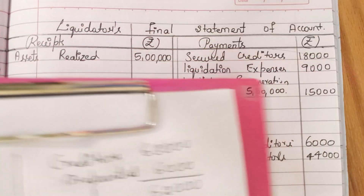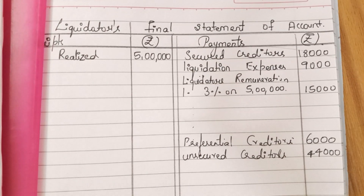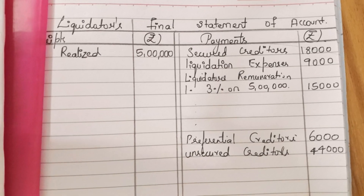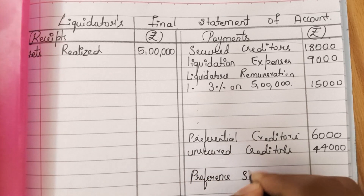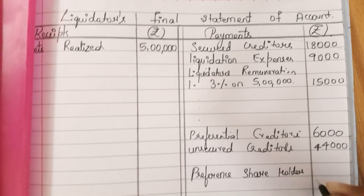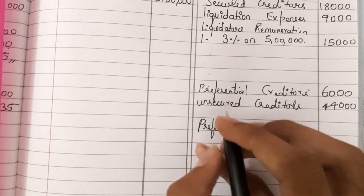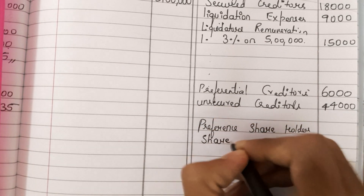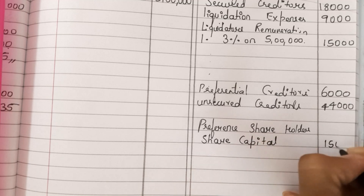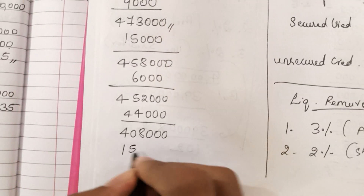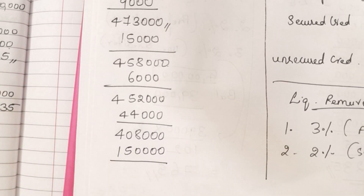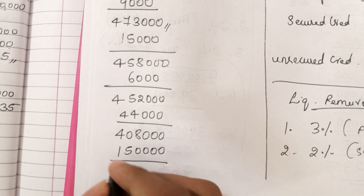Now, the equity shareholders as well as preferential shareholders will be paid, but the preference shareholders get one-third of the surplus. First, we pay preference shareholders. The preference share capital is rupees 1,50,000. Let us give them whatever capital amount we received from them. So from 4,08,000 minus 1,50,000, the remaining balance is 2,58,000.